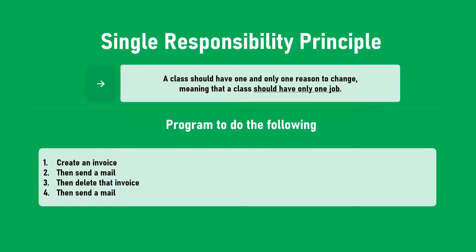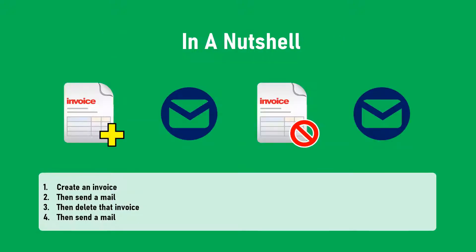Let's take an example. We need to create an invoice, then send a mail, then delete the invoice, and then send the mail again. So the steps are: first create an invoice, then send a mail, then delete the invoice, and then send the mail again.